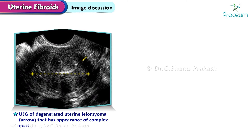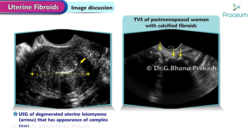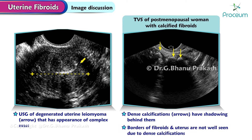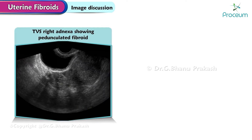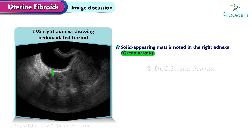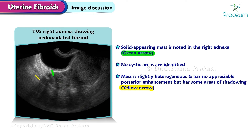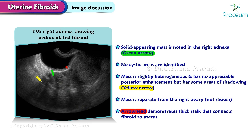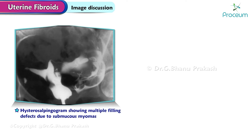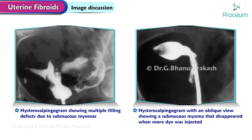Here is an ultrasound of a degenerated uterine leiomyoma that has the appearance of a complex mass. Here is a transvaginal image of a postmenopausal woman with calcified fibroids; the dense calcifications have shadowing behind them; the borders of the fibroids and uterus are not well seen due to the dense calcifications. Here is a transvaginal ultrasound image of the right adnexa showing a pedunculated fibroid; a solid appearing mass is noted in the right adnexa; no cystic areas are identified; the mass is slightly heterogeneous and has no appreciable posterior enhancement but has some areas of shadowing; the mass is separate from the right ovary. The arrowhead demonstrates a thick stalk that connects the fibroid to the uterus.